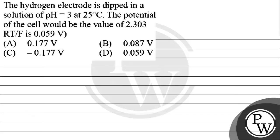Hello kids, let's read this question. The question says, hydrogen electrode is dipped in a solution of pH 3 at 25 degrees Celsius. The potential of the cell would be, we ask the potential of the cell, what will happen?